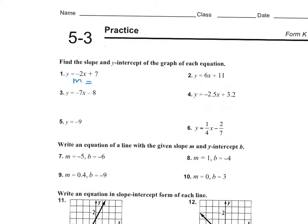Say that again — slope is what? So the slope is negative two, right? Whatever comes before the x is the slope. So negative two would be my slope. What's my y-intercept? Seven.